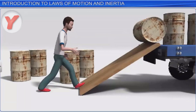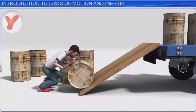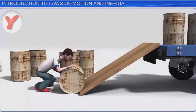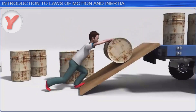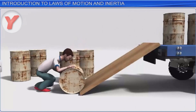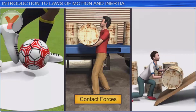Similarly, when a barrel is being unloaded from a truck using an inclined plane, it tends to roll down fast unless its motion is restricted by some opposing force. In this case, the barrel has a tendency to move faster but is being restricted by a force due to an external agency. In all these examples, the external agency applying the force was in contact with the object in motion. Hence, these forces are known as contact forces.